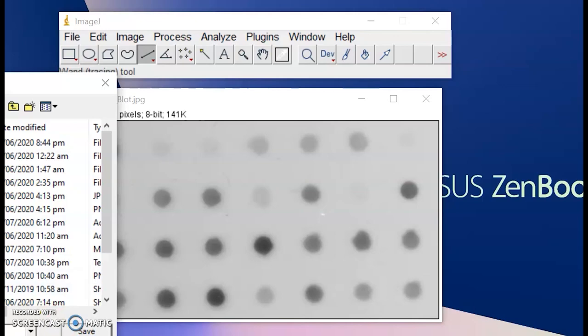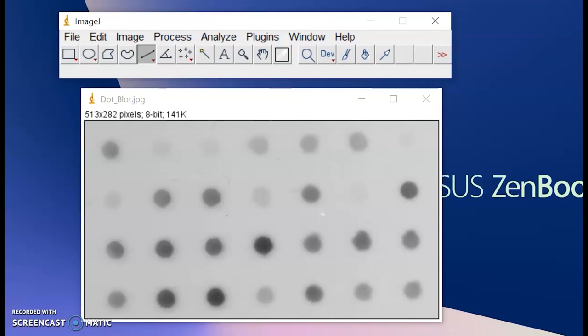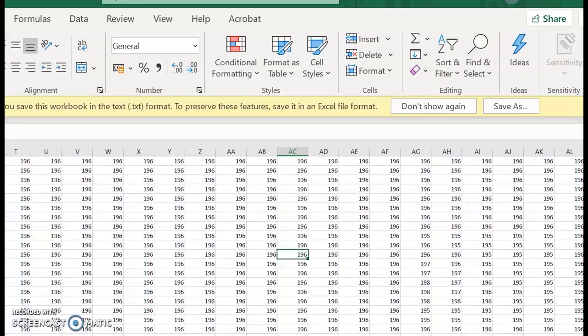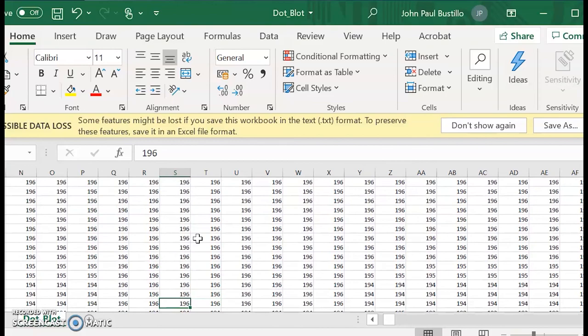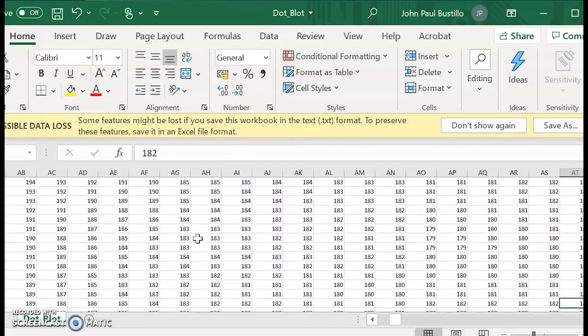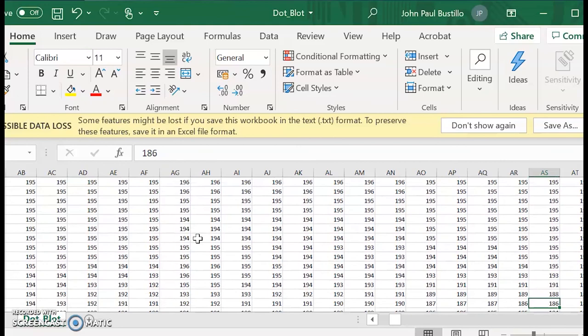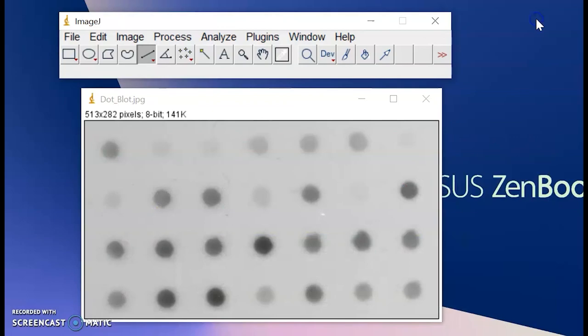After saving it, I can open it in Excel and we can observe this. The image is now converted into an array of values. As you can observe, the values are less than 255. They should range from 0 to 255 given that this is an 8-bit image.